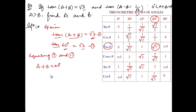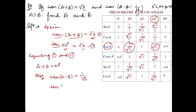Next, we know that tan(a-b) = 1/√3. From the trig table, 1/√3 corresponds to 30°. So tan 30° = 1/√3. This is equation number 4.